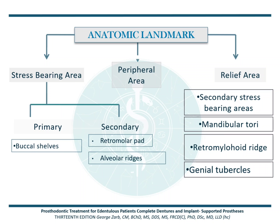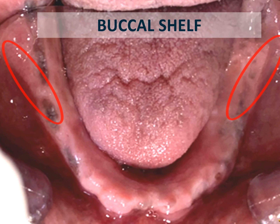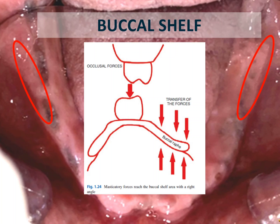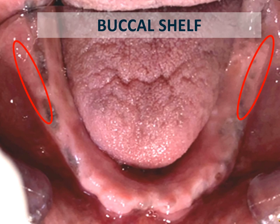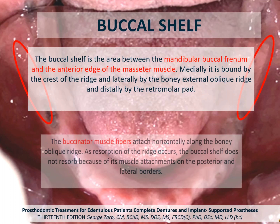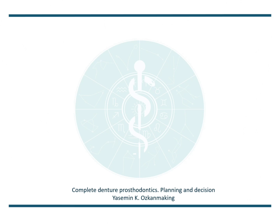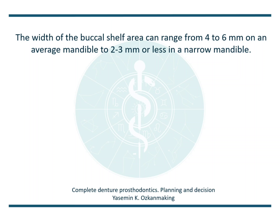The buccal shelf is a dense cortical bone and it lies at right angles to vertical occlusal forces, and is therefore the primary stress-bearing area for the denture. The buccal shelf is the area between the mandibular buccal frenum and the anterior edge of the masseter muscle. Medially it is bounded by the crest of the ridge, laterally by the bony external oblique ridge, and distally by the retromolar pad. The buccinator muscle fibers attach horizontally along the bony oblique ridge. As resorption of the ridge occurs, the buccal shelf does not resorb because of its muscular attachments on the posterior and lateral borders. The width of the shelf area can range from 4 to 6 mm on an average mandible, and 2 to 3 mm or less in a narrow mandible.